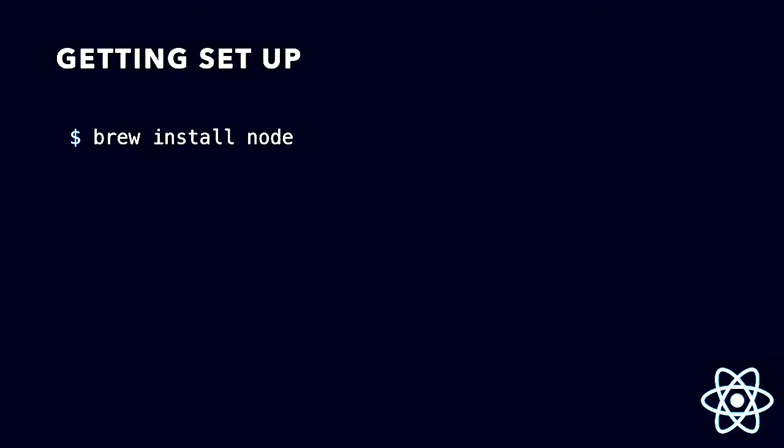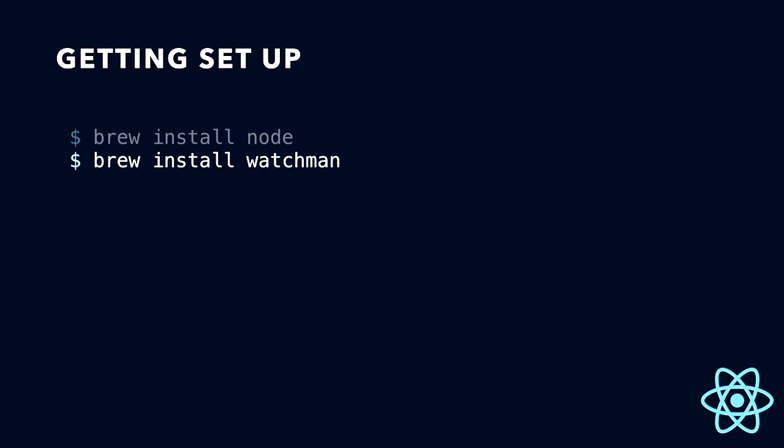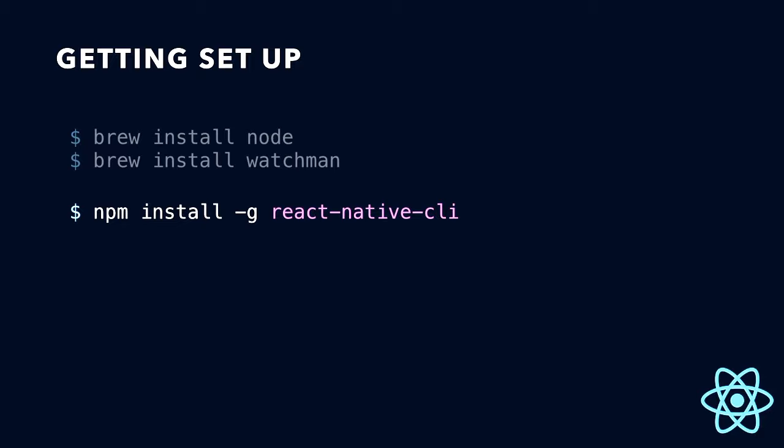Getting set up is super easy if you're on a Mac. You just need Homebrew. First, brew install Node — get Node on your computer. And then Watchman. Watchman will watch your files for any changes and it allows you to do hot reloading. So if you go and change one of your JavaScript files and save it, boom, the simulator's going to show exactly what just happened. You don't have to rebuild your entire app.